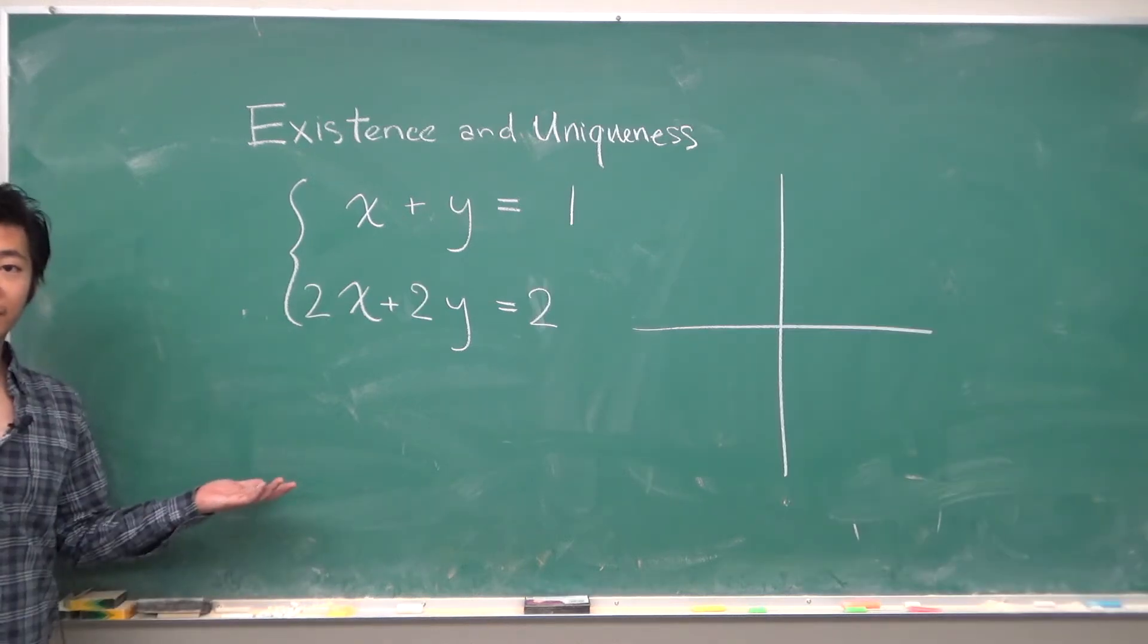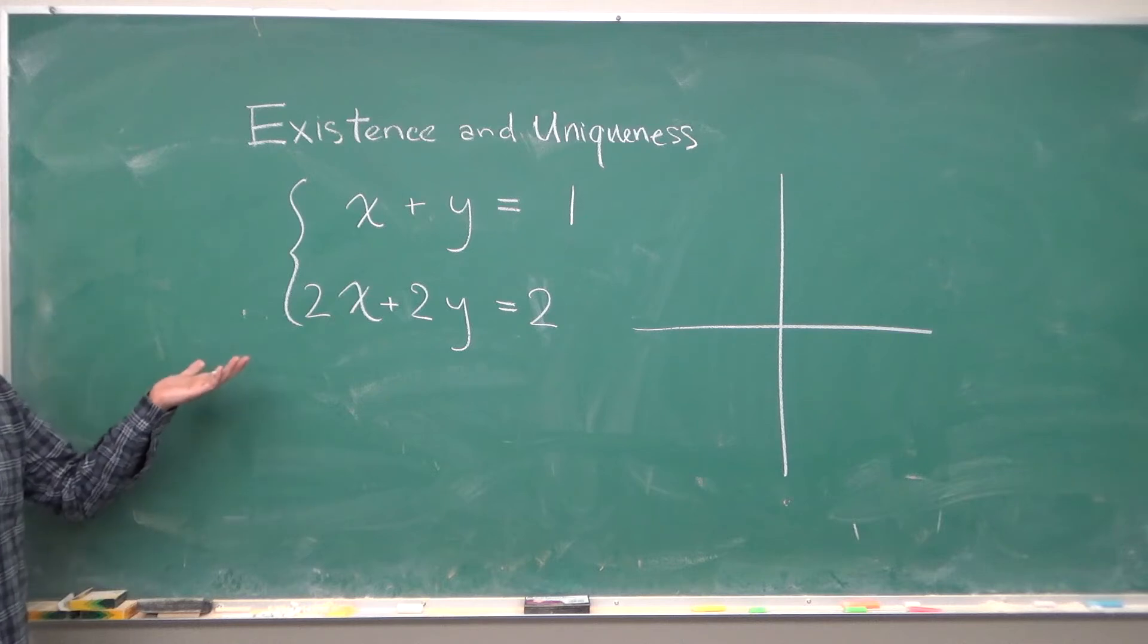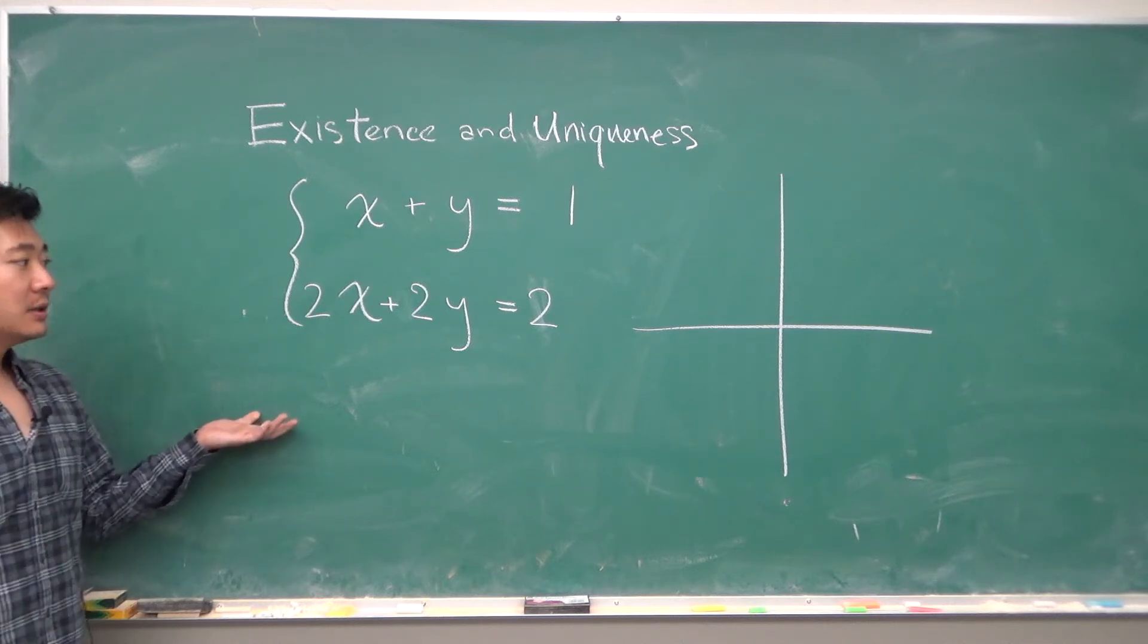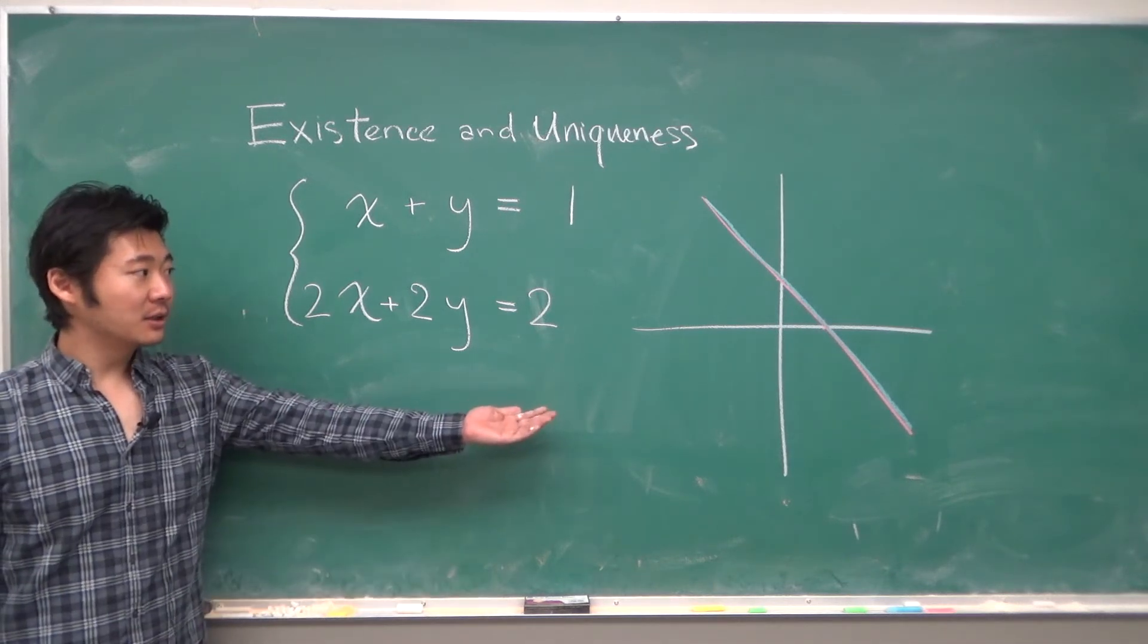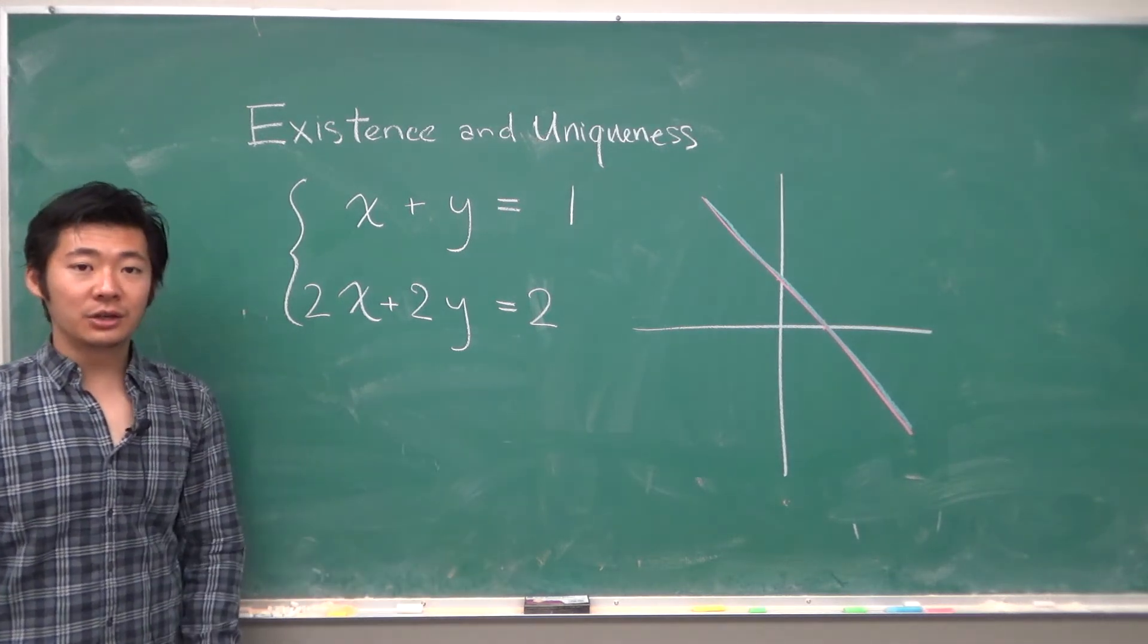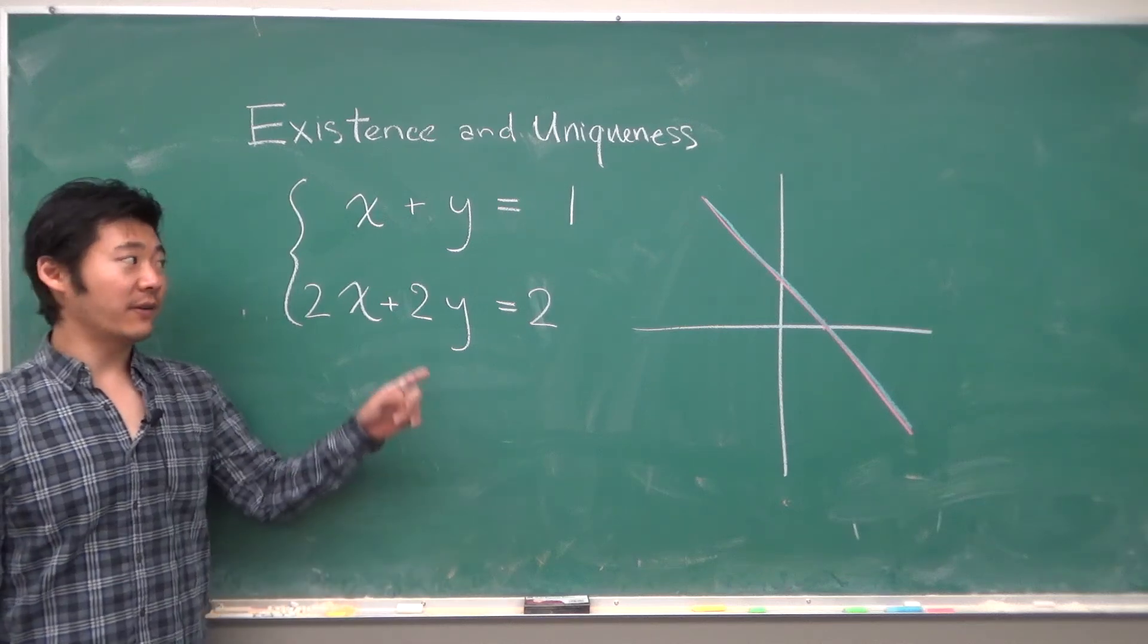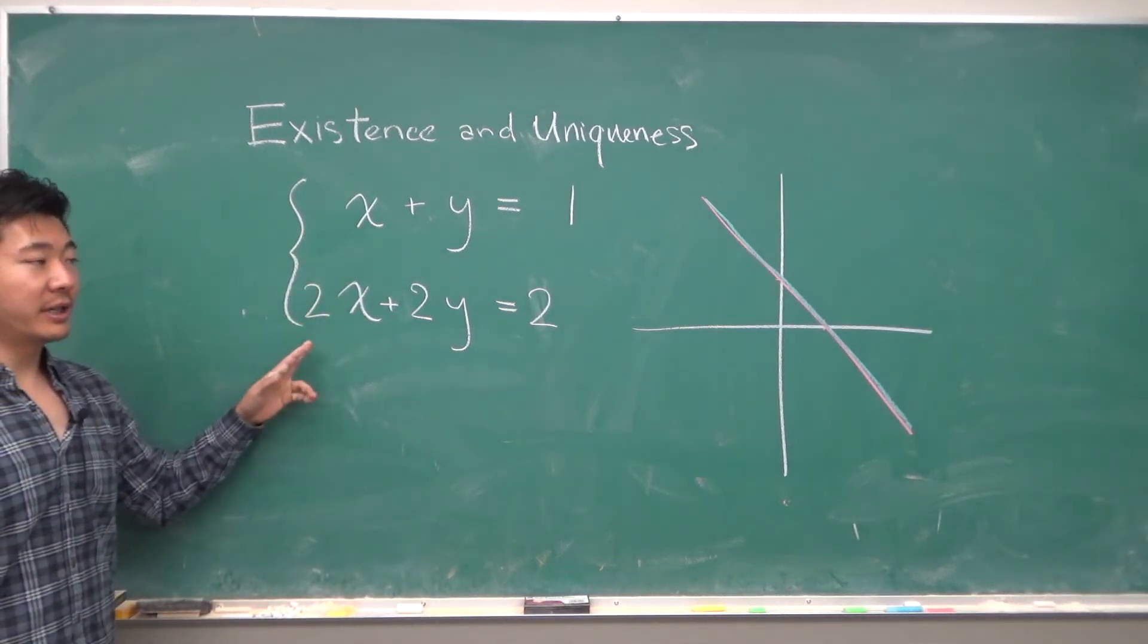Next, let's consider a case where we have x plus y equals 1 and 2x plus 2y equals 2. If we graph them, we get something like this, two overlapping lines. So all points on that line satisfy these two equations simultaneously.